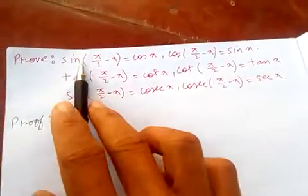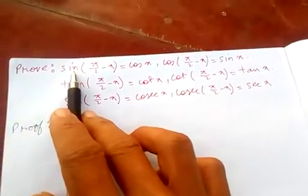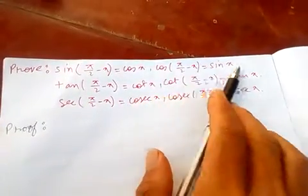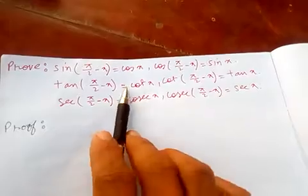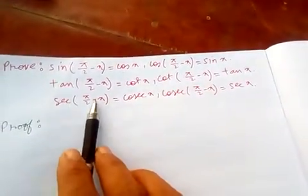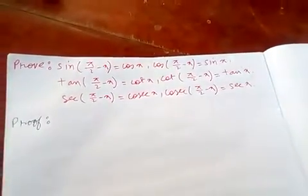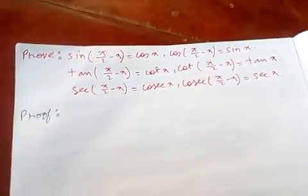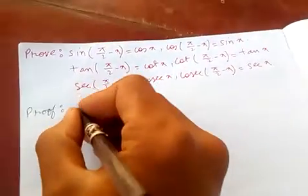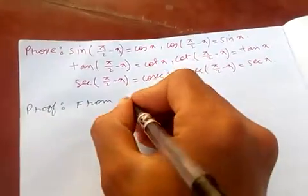Hello friends, today I'm going to discuss trigonometry identities: sin(90-x) = cos x, cos(90-x) = sin x, tan(90-x) = cot x, sec(90-x) = cosec x, and cos(90-x) = sec x. I'm going to prove these using Euler's formula.